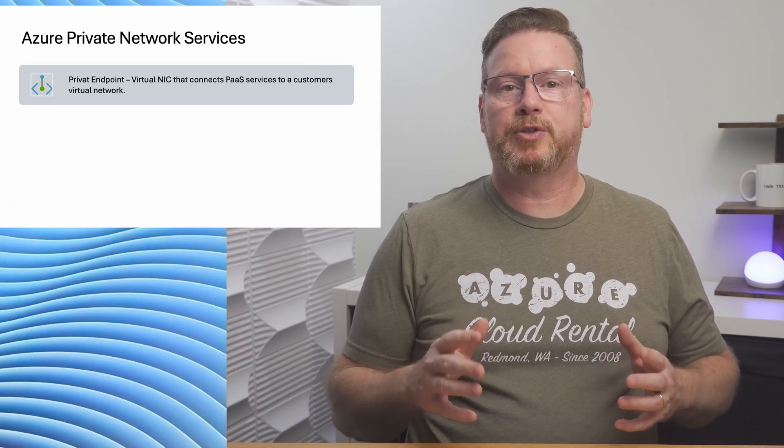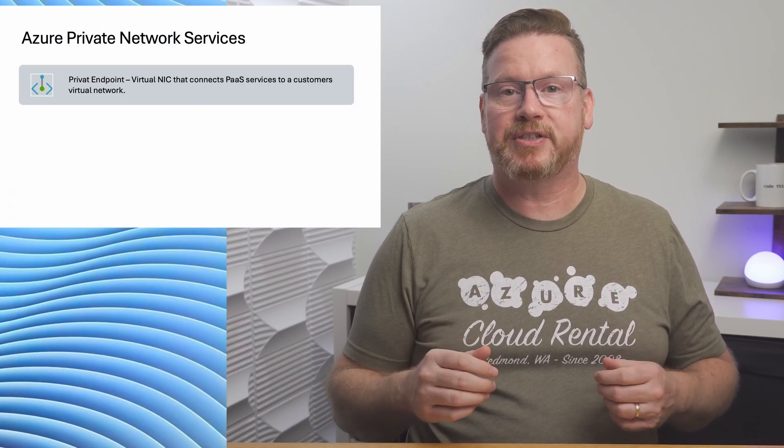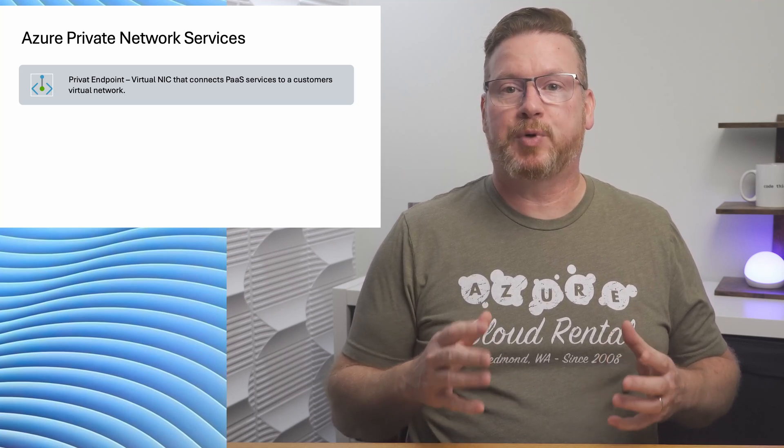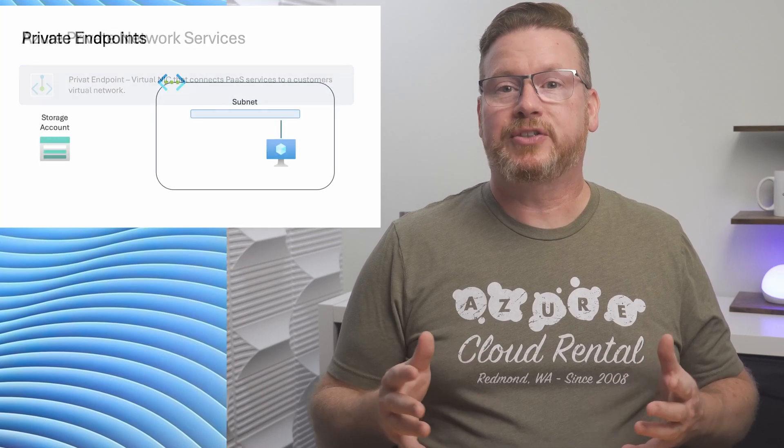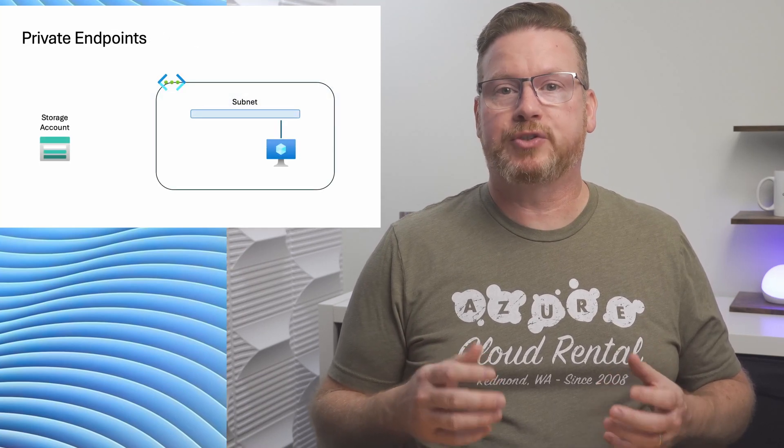To be honest, it took me some time to understand what exactly the Private Link Service is and how it would be used in an organization. To make sense of it, we need to review some Azure private networking concepts. First is a private endpoint — this is a virtual network interface that connects a PaaS service to a customer's virtual network.